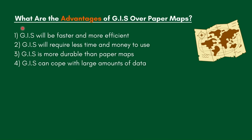If asked what are the advantages of using GIS over paper maps, there are four possible answers. First, GIS will be faster and more efficient. Second, GIS will require less time and money to use. Third, GIS will be more durable than paper maps — remember paper maps could tear. And fourth, GIS can cope with large amounts of data.